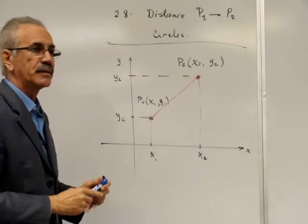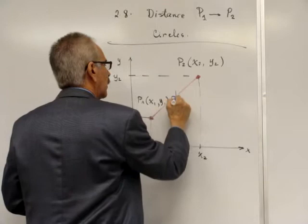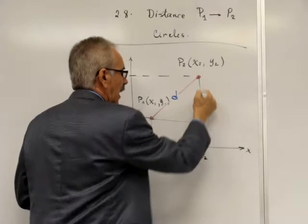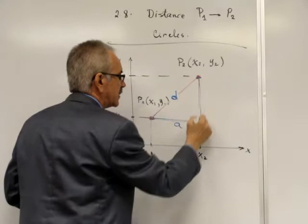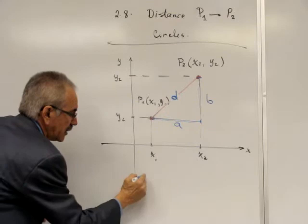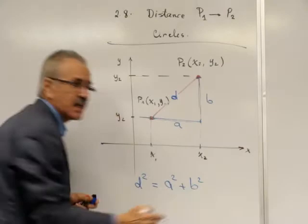Let me remind you what you know from school times. The distance between these two points can be calculated using the Pythagorean theorem. If I consider that distance is A and that distance is B, so obviously the distance D squared is equal to A² plus B². It's a theorem you know very well from school years.